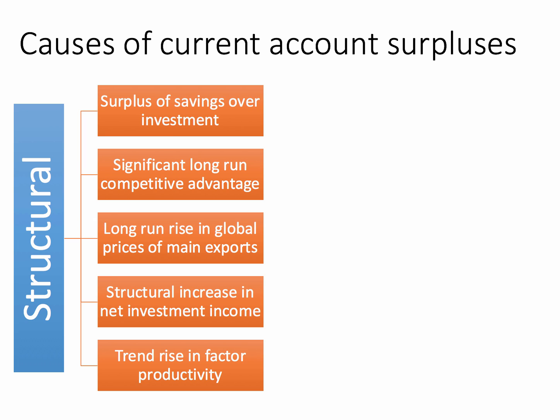It could be the case that a country's main exports have become more expensive in world markets, so the terms of trade have moved in their favour — getting a higher price for every barrel of oil they sell. A current account surplus can also benefit from a structural increase in income flows from investments overseas. Some countries may have many hundreds of thousands of workers abroad who send back remittance income, which adds to their current account balance. Another supply side reason could be that countries successfully increased their productivity — measured by output per worker — or have been very successful in innovating through research and development.